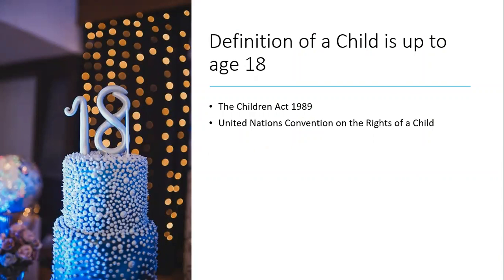Let's start with a definition of a child. A child is someone up until their 18th birthday, as stated in the Children Act 1989 and the United Nations Convention on the Rights of a Child. When somebody turns 18, they become an adult and are allowed to do all the things adults are permitted to do, such as gamble, take out credit cards and mortgages, smoke, and drink alcohol.